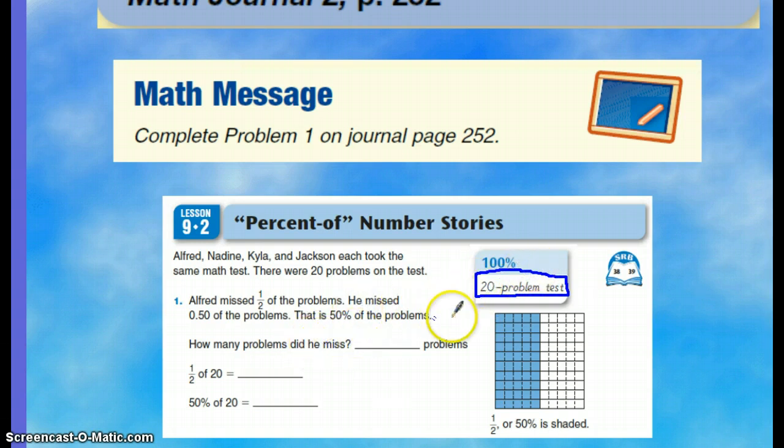Well, if he missed half of them, he missed half of 20, which is 10. So half of 20, again, 10. So 50 percent of 20 is 10.